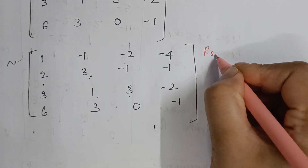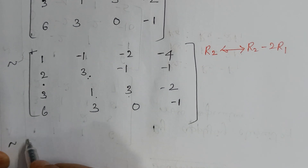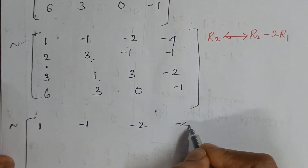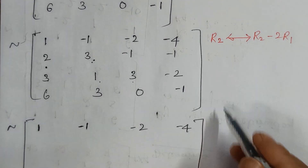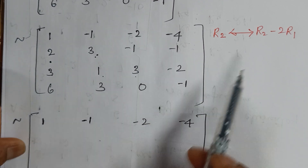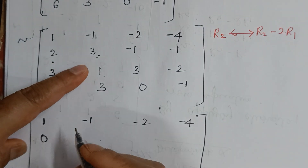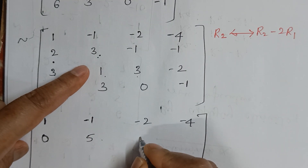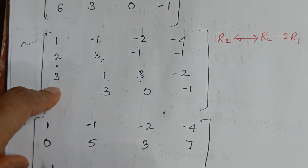Row 1 is fine, I won't touch it. For row 2, I'll perform R2 → R2 - 2R1. So: 2 - 2(1) = 0, 3 - 2(-1) = 5, -1 - 2(-2) = 3, -1 - 2(-4) = 7. Row 2 becomes: 0, 5, 3, 7.